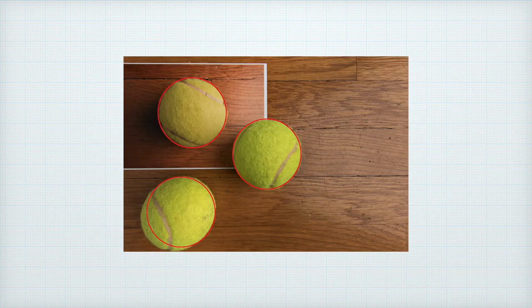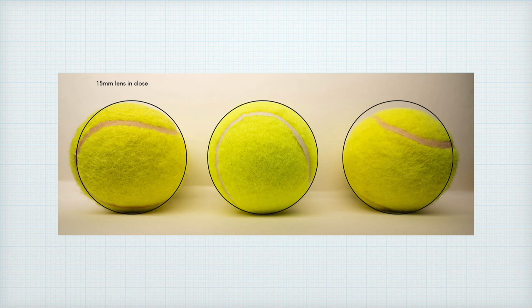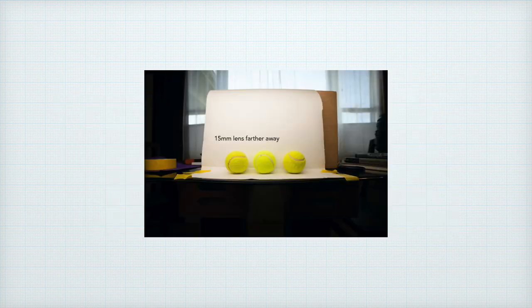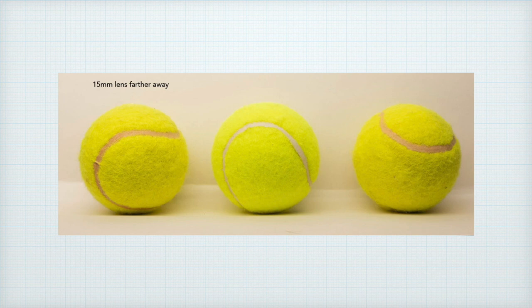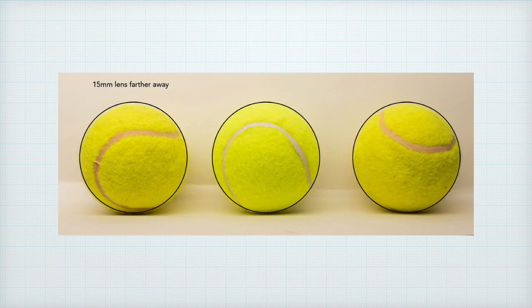Here are three tennis balls photographed from about 3 inches away with a 15mm lens. The center ball is round as expected, but the end balls have taken on an elongated shape. Moving the camera back with the same 15mm lens gets much more of the scene in the frame, and if we crop in on this photo, the balls on the end are not as elongated — the extra distance cured that, but the resolution is now low from the extreme crop. So instead of cropping in post, you can move back and use a longer lens to fill the frame.